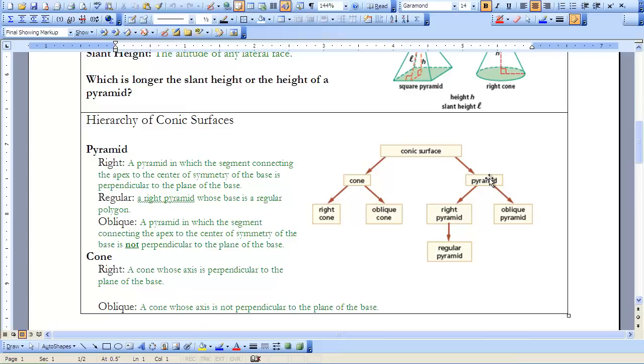A right pyramid whose base is a regular polygon would be a regular pyramid. Just like with the prisms, if the base was a regular polygon, then it would be a regular prism. So that holds true with pyramids. If you have a right pyramid and the base is a regular polygon, then that is called a regular pyramid.